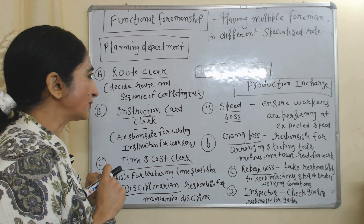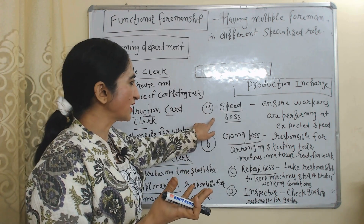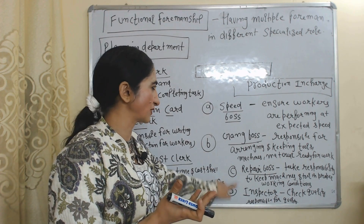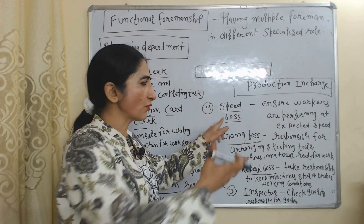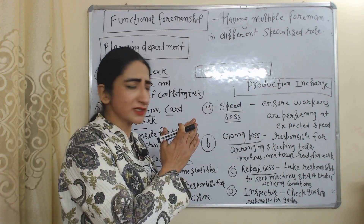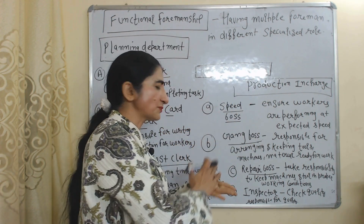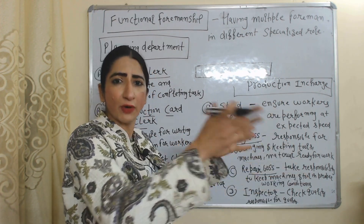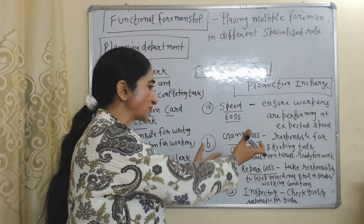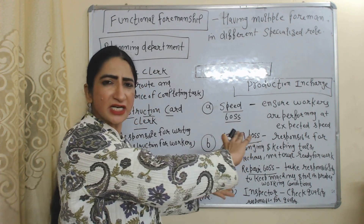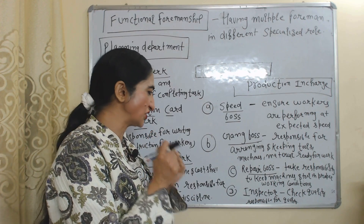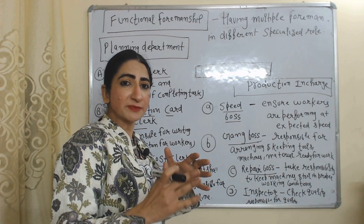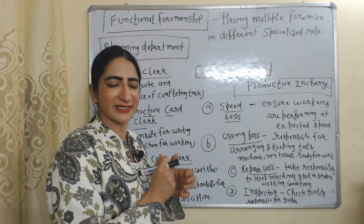As production in charge, we have the speed boss, gang boss, repair boss, and inspector. The speed boss will ensure workers are performing at expected speed. The gang boss is responsible for arranging and keeping tools, machinery, and material ready for work. The repair boss takes responsibility to keep machinery and tools in proper working condition. The inspector will check quality — the inspector is responsible for quality.